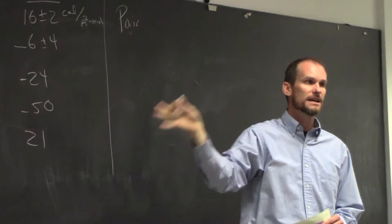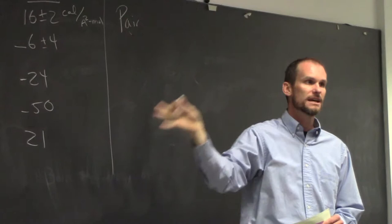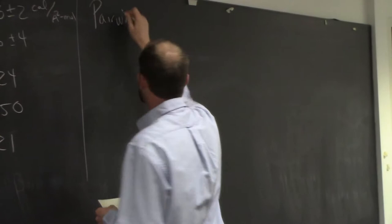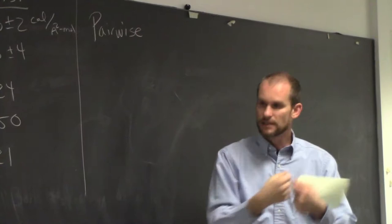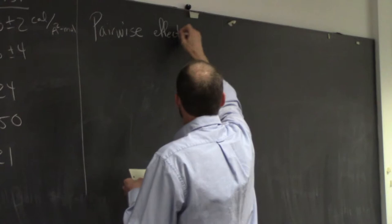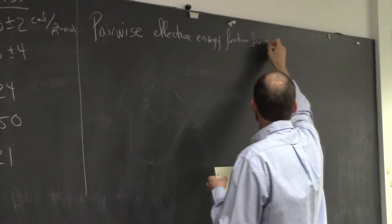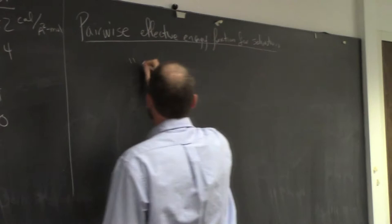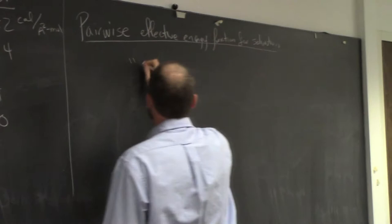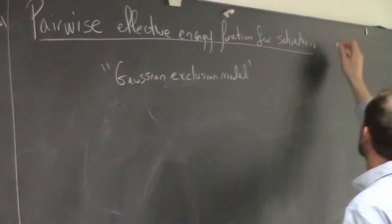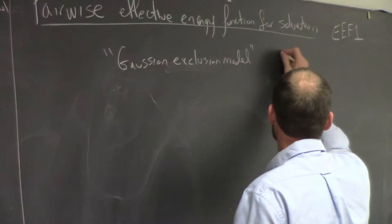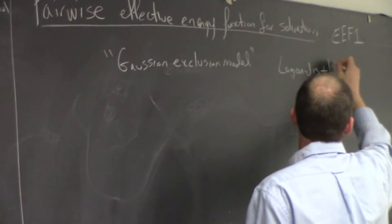For a fast pairwise calculation we use the pairwise effective energy function for solvation, also called the Gaussian exclusion model or EEF1. This is by Lazaridis and Martin Karplus - who won the Nobel Prize - published in 1999. How this works: we have a carbon atom and another carbon atom, and as these come together we look at how the potential varies with distance. As they come together we make it less likely to see solvent atoms in between - the Gaussian refers to how the waters fluctuate around.